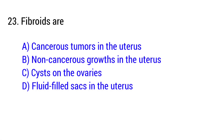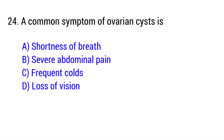Question number 23: Fibroids are — the right answer is Option B: Non-cancerous growths in the uterus. Question number 24: A common symptom of ovarian cysts is — the right answer is Option B: Severe abdominal pain.